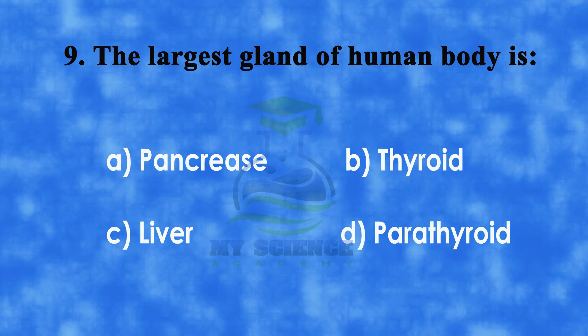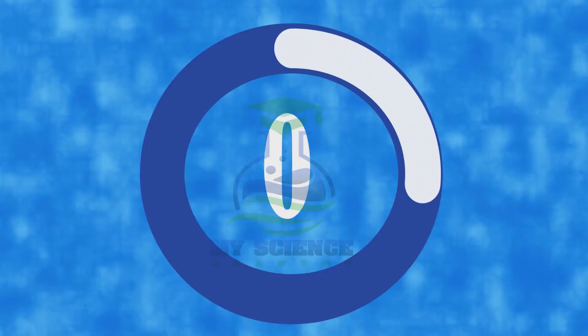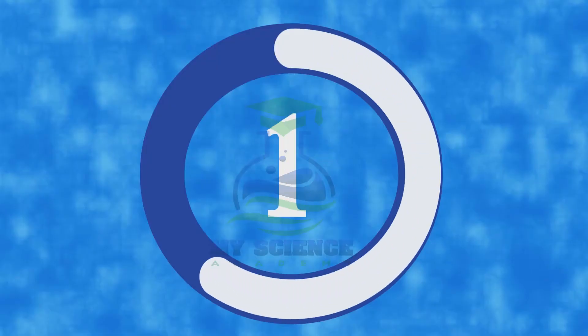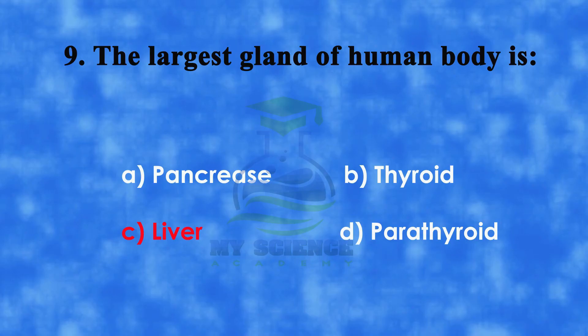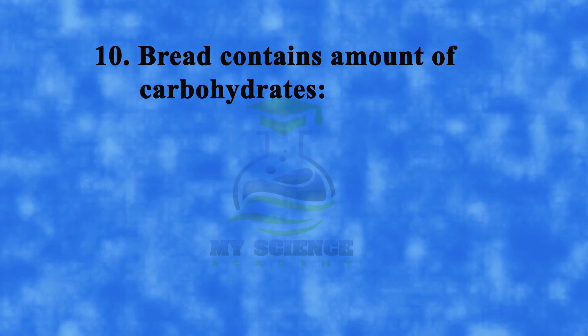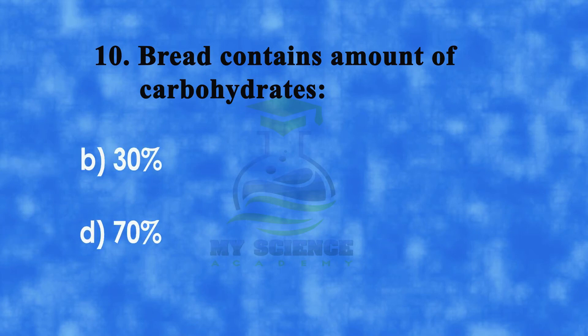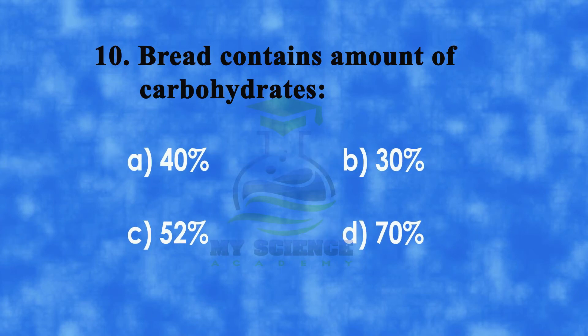Question number nine: the largest gland of the human body is — a) pancreas, b) thyroid, c) liver, or d) parathyroid. The correct answer is c) liver.